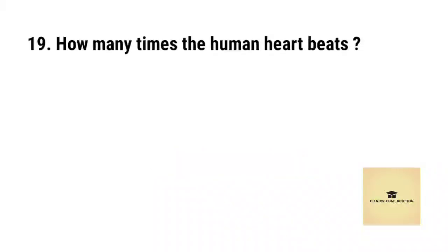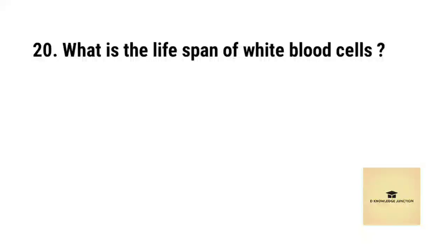How many times the human heart beats? Right answer is 72 times per minute. What is the life span of white blood cells? Right answer is 12 to 20 days.